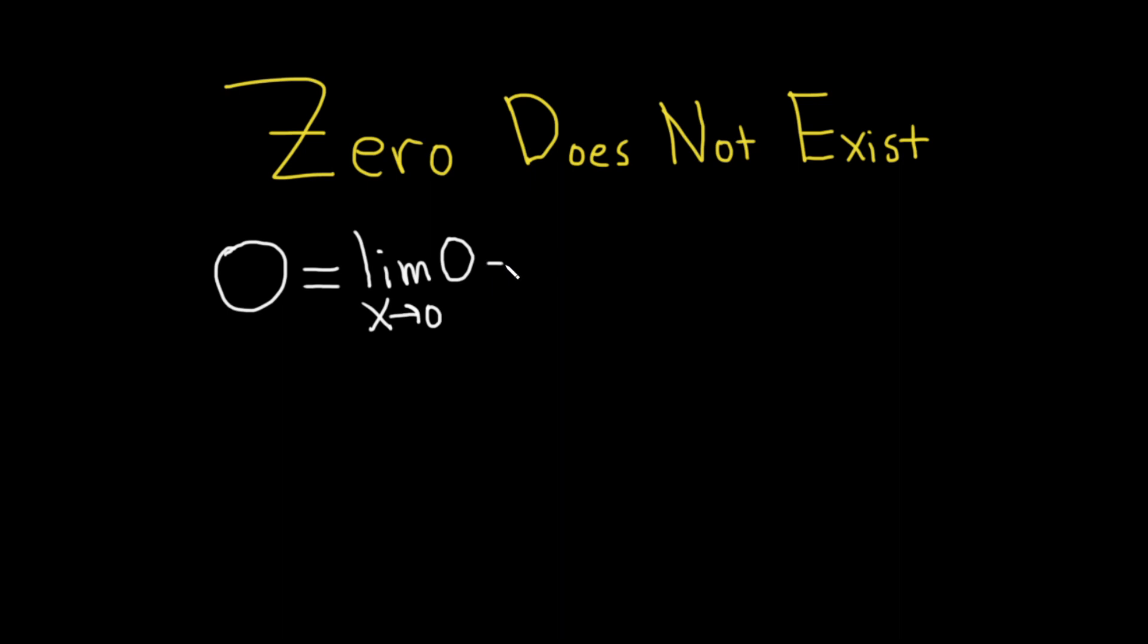And the next step is really interesting. Now we're going to introduce some funny stuff. So we still have the limit sign. Now I'm going to write zero in a clever way. I'm going to write it as 1/x minus 1/x.